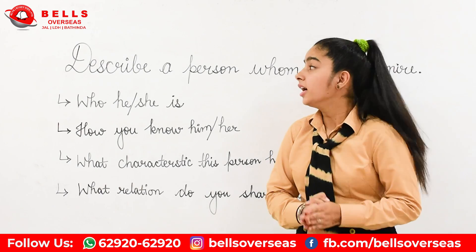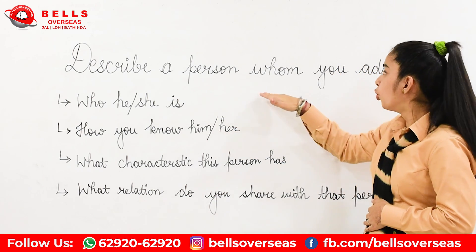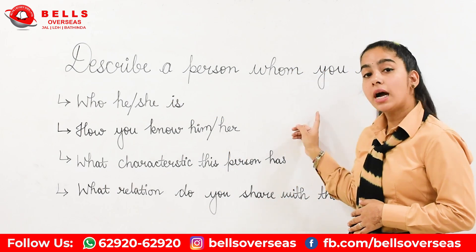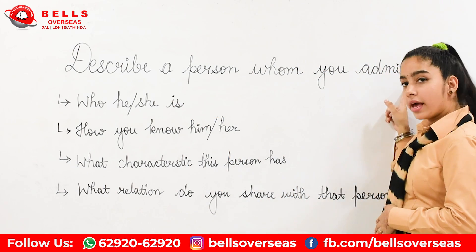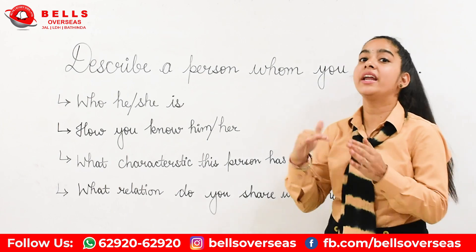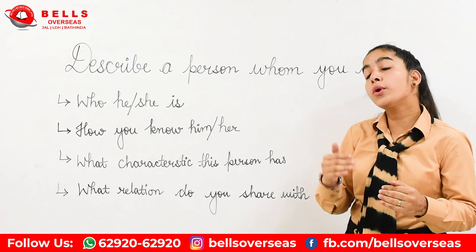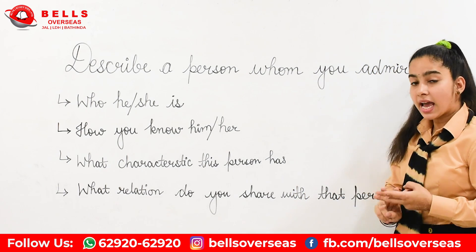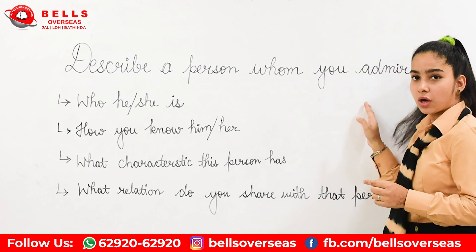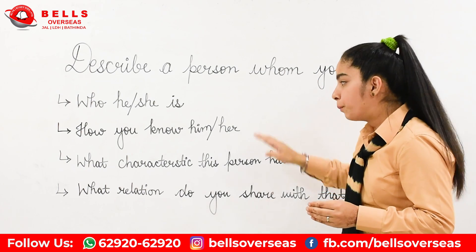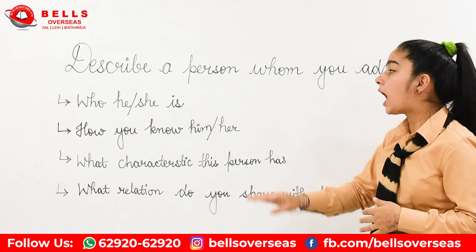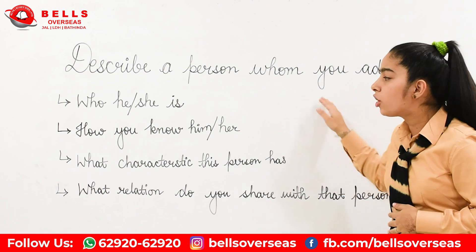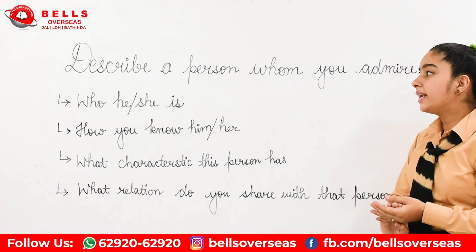Let's move to the next part. Here comes the main topic — the cue card. The cue card says: 'Describe a person whom you admire.' You cannot skip any of the bullet points.